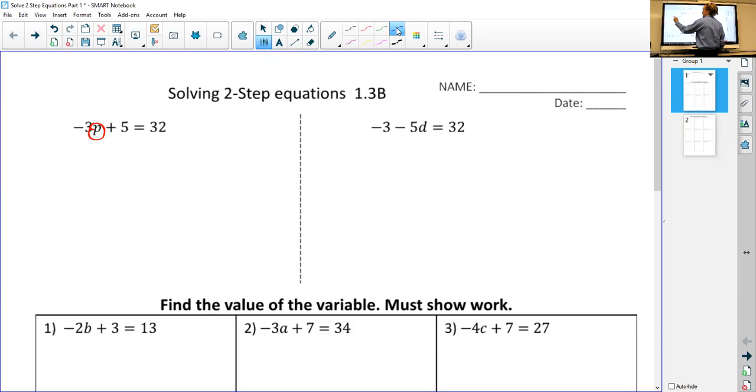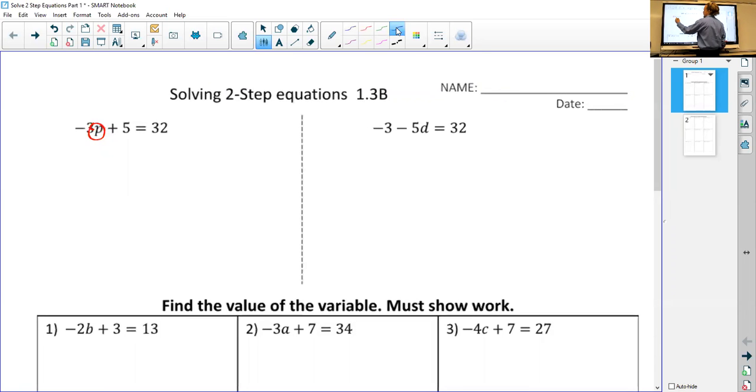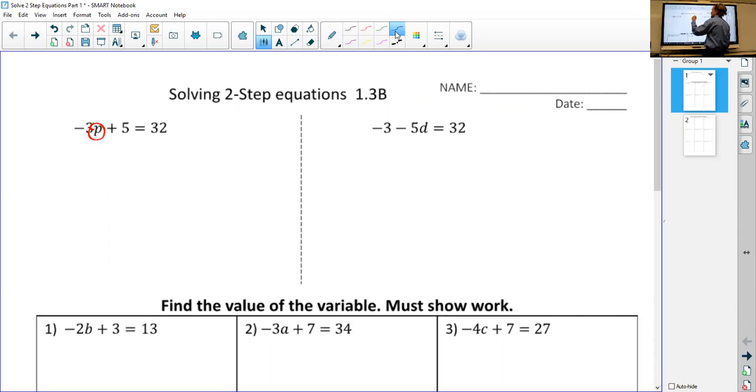So if I want to get rid of positive five, I'm going to do minus five. If I do that on the left side, I have to do it on the right side as well. So these fives will cancel out. Bring it down. So negative three P equals 32 minus five is 27.